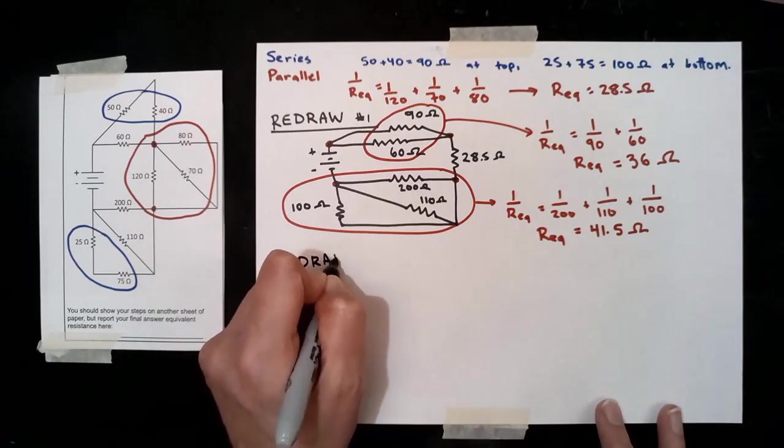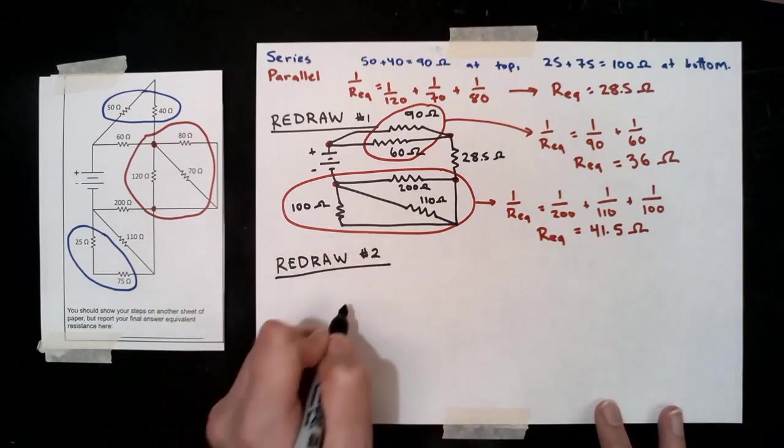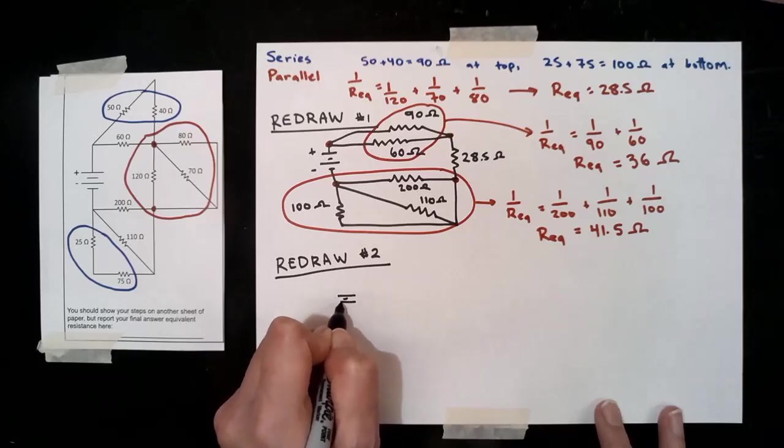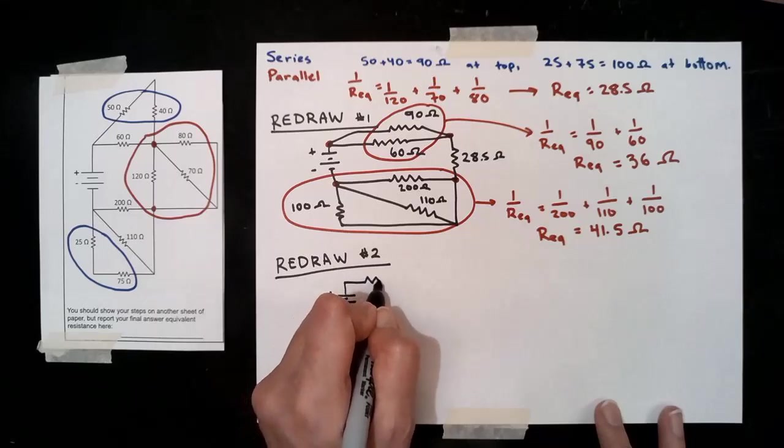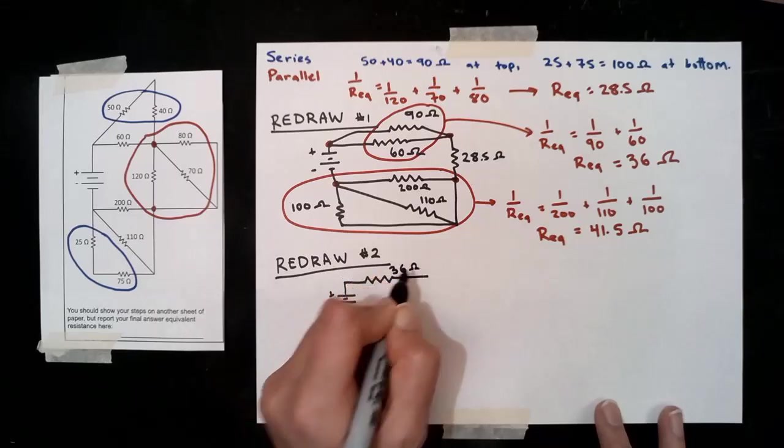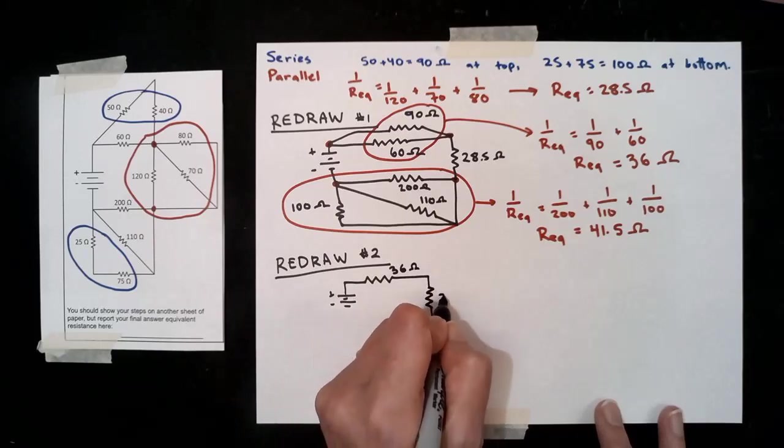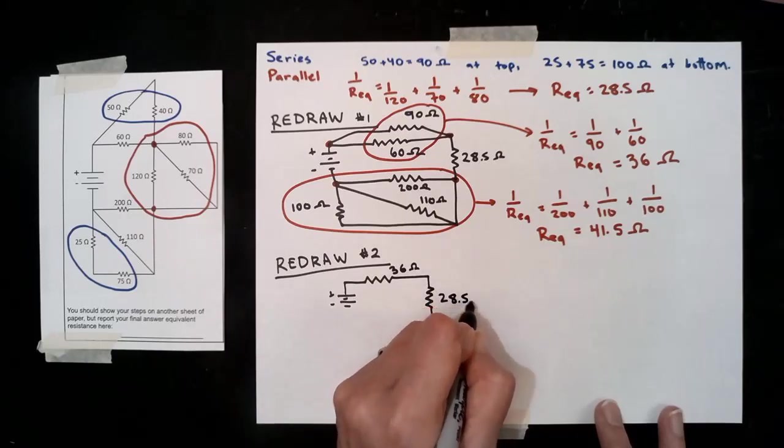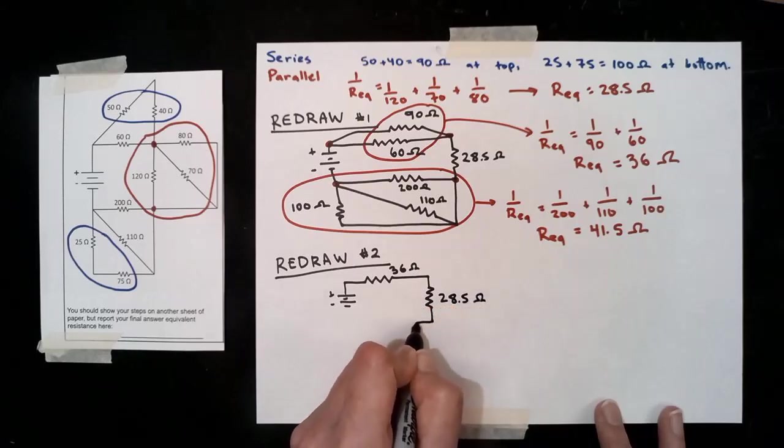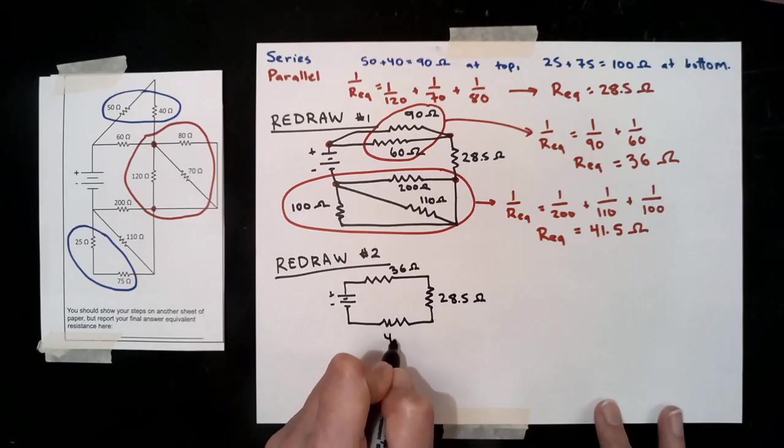Now, for us to know what's left, it really is a good idea to redraw the circuit again. So we still have the battery. Now we have on top the 36 ohms. We still have the 28.5 ohm equivalent resistance that we calculated before, and now we have the 41.5 ohm equivalent resistance at the bottom.